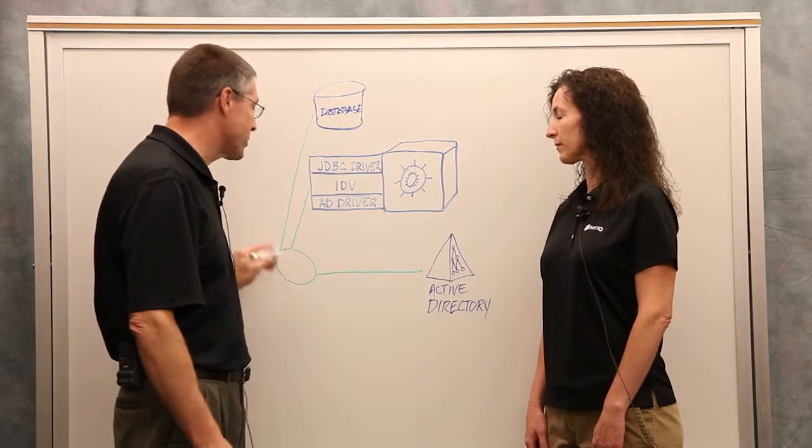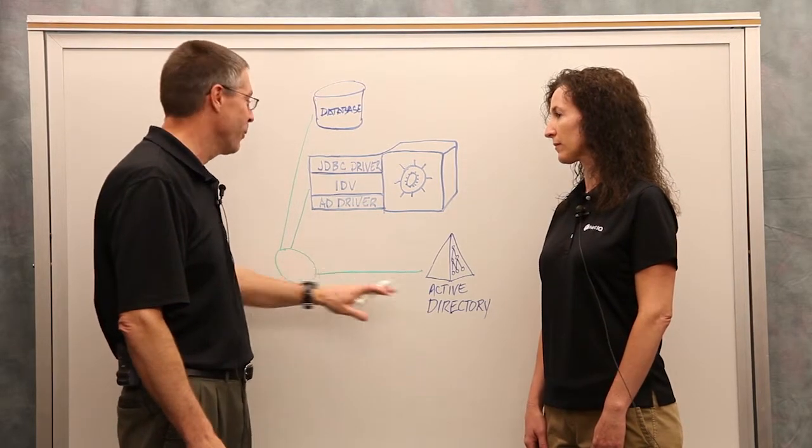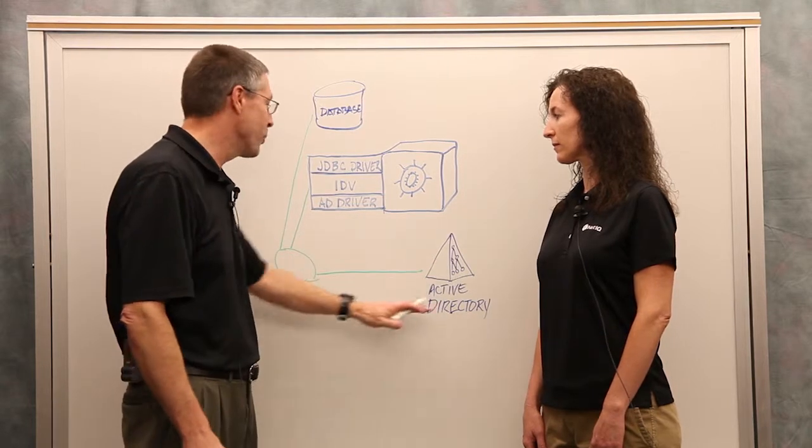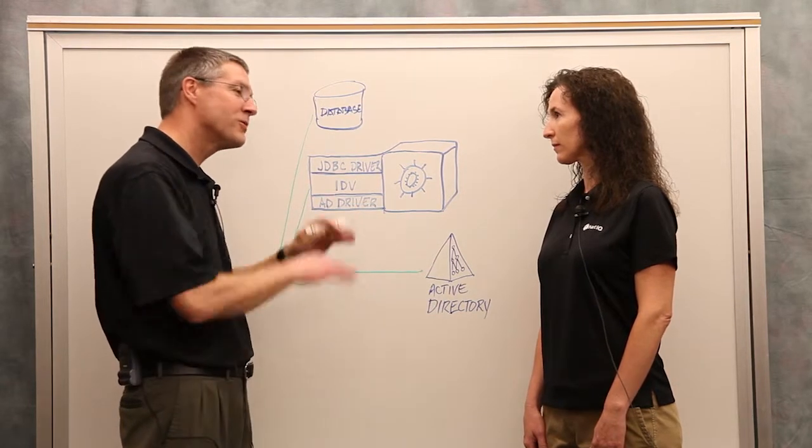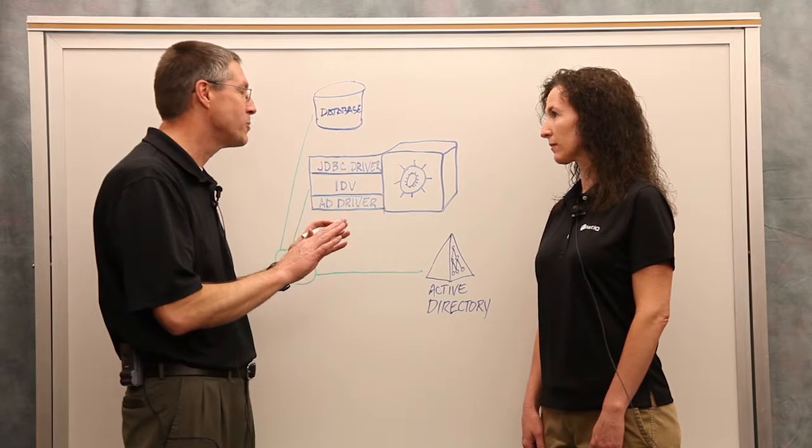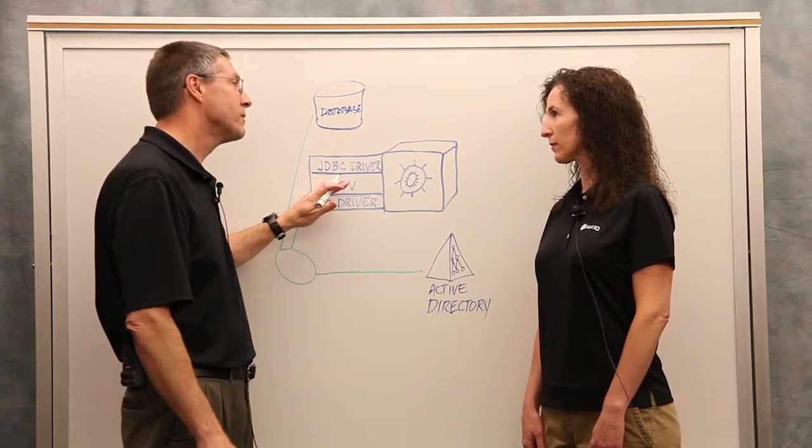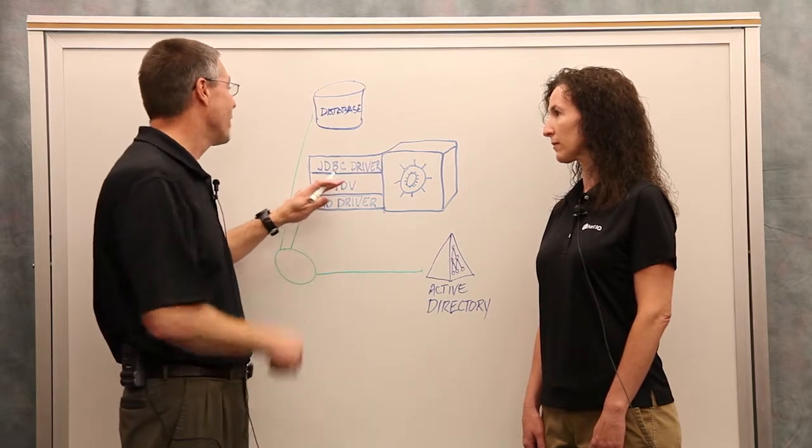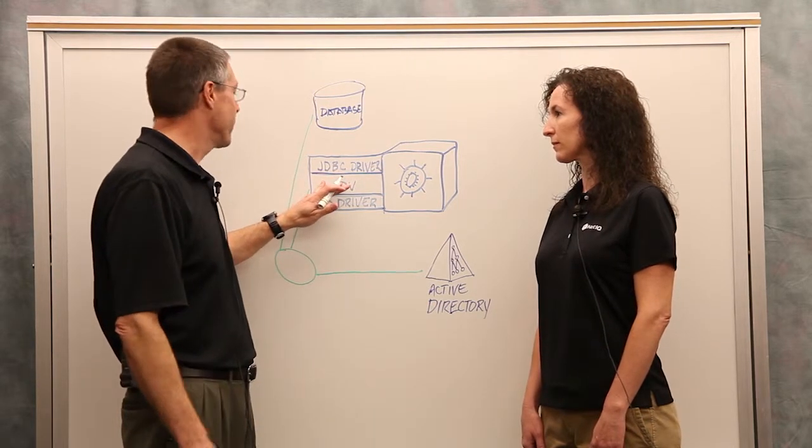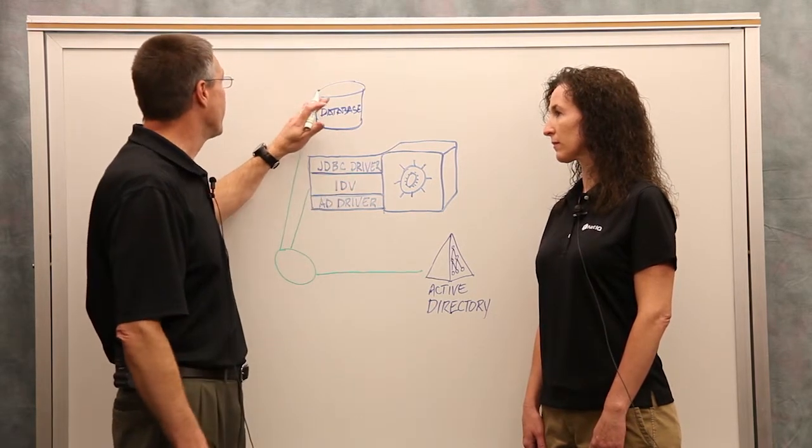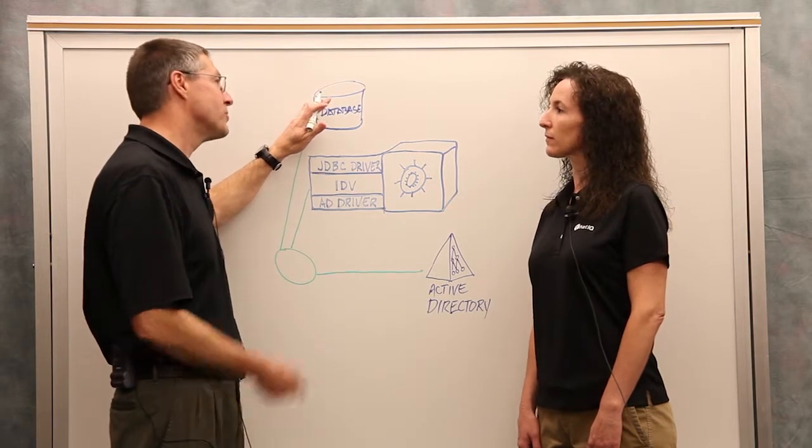Within Validator, you simply say, what do I want to do? I want to create an object here. So in Active Directory, create a user, specify what attributes we want in the user. Then we check to make sure it exists over here using just a simple 'does object exist' within Validator. And then over here, we make sure that the row exists in the database.